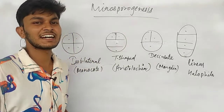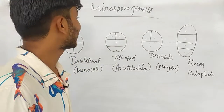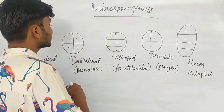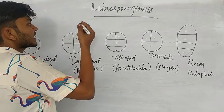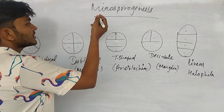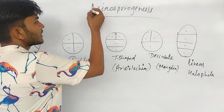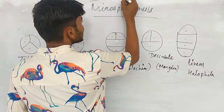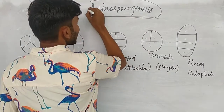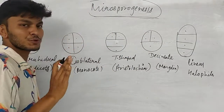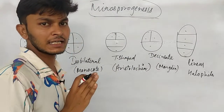Hello, good morning class. Today we will talk about Chapter number 2, Reproduction in Flowering Plants. The next topic is Microsporogenesis.